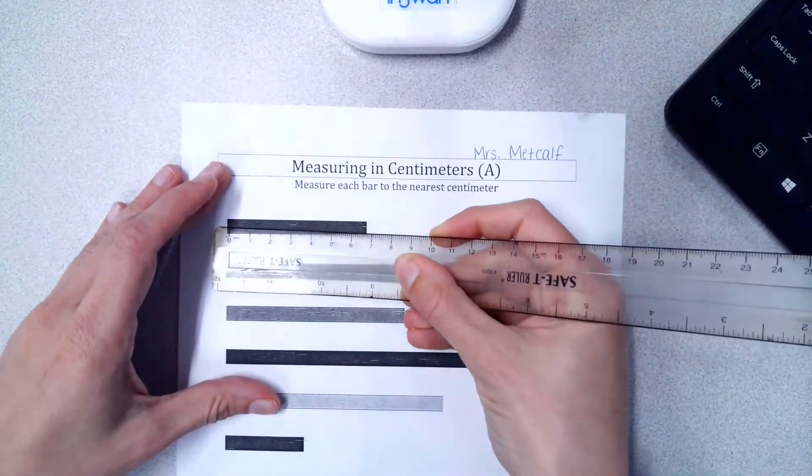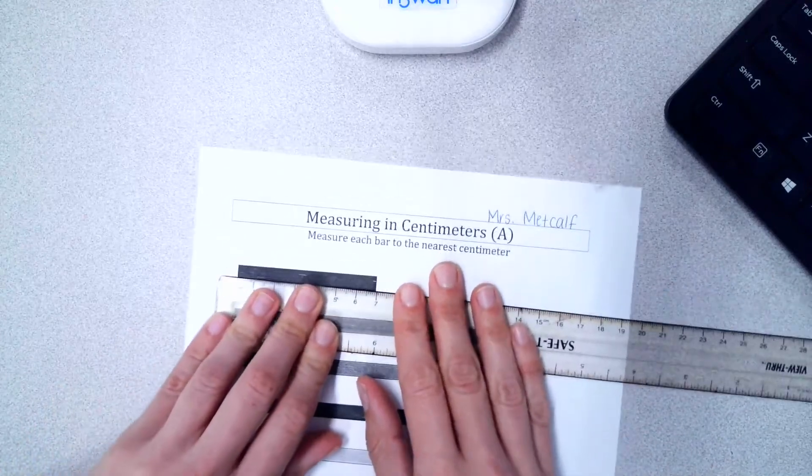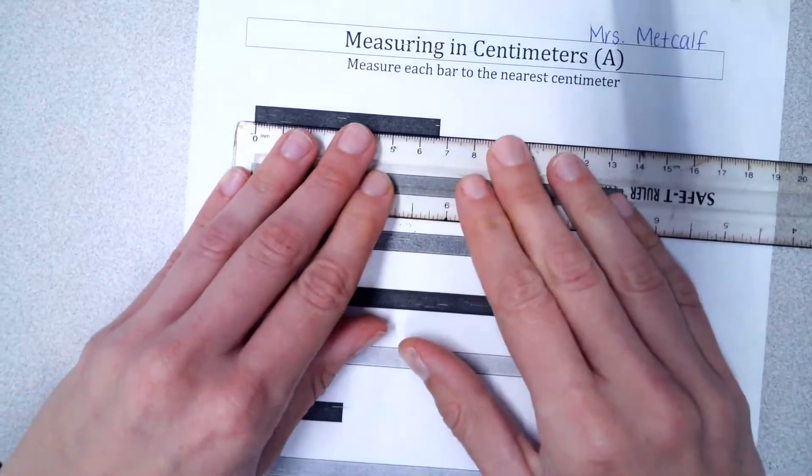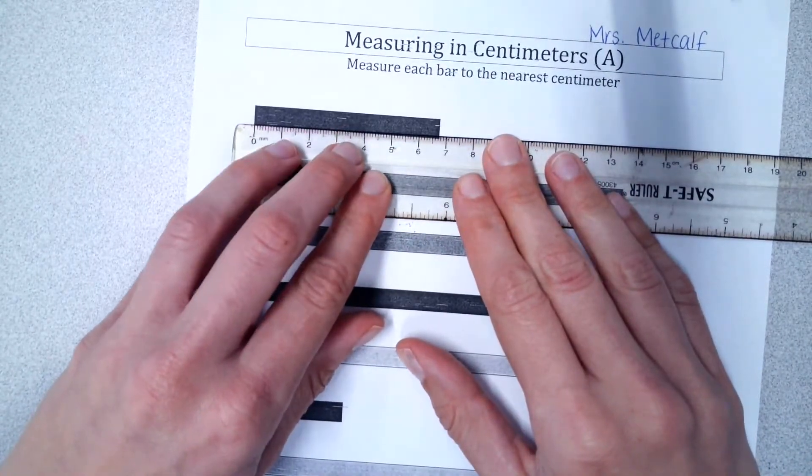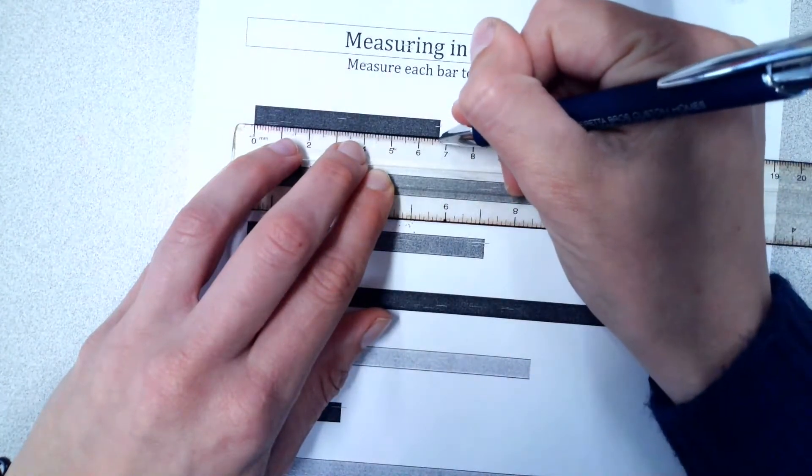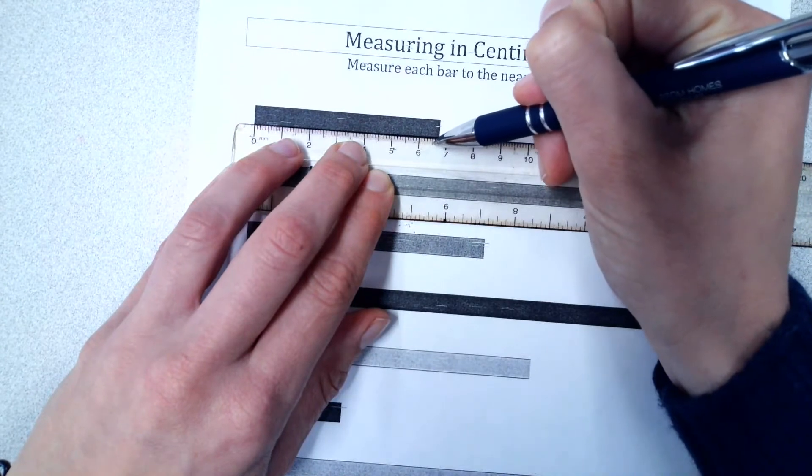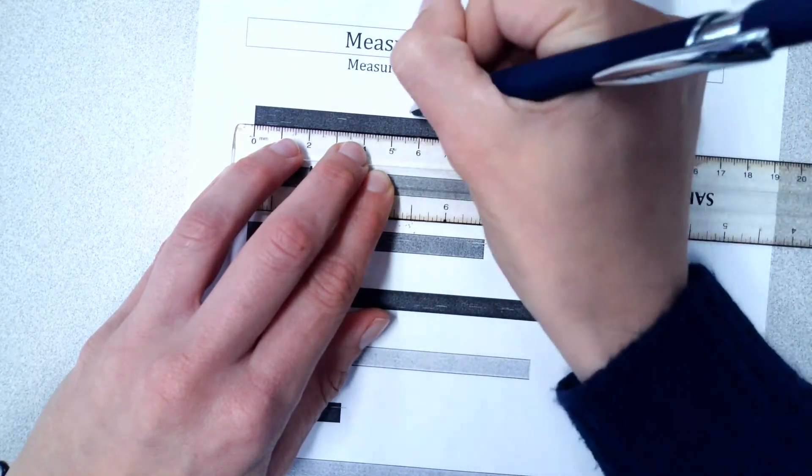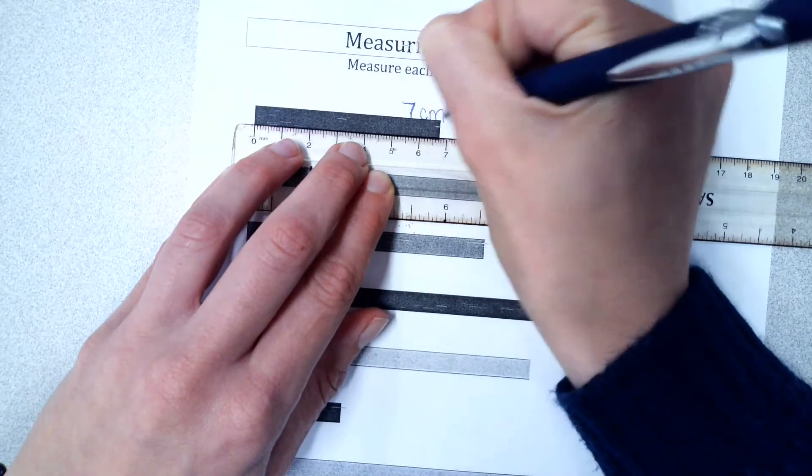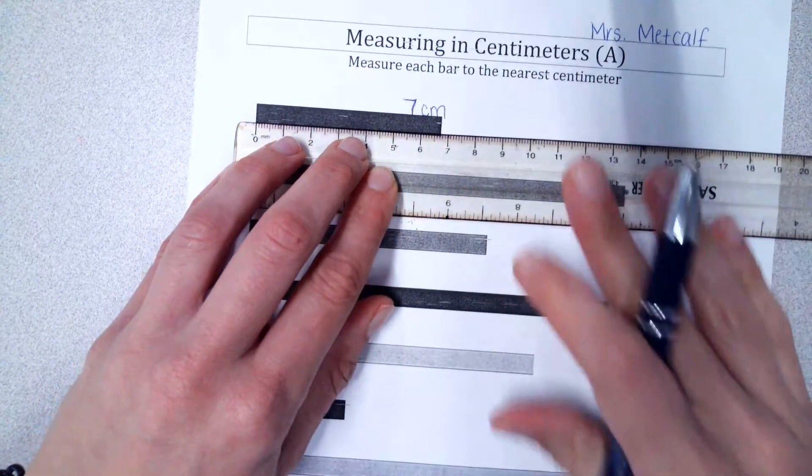I'm going to line my lineup at the zero tick. And then I put my ruler down and I see what number is closest to the end of the line. So it comes right here, which means it's closer to the seven because this is the half tick here. So it's past the half tick. So this is seven and right above it on the line is where we'll write it. So seven and then label it centimeters CM.